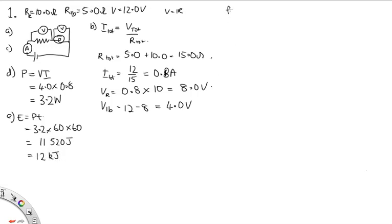Part F says now draw a circuit diagram showing the battery, resistor, and light bulb connected in parallel. Here's our battery, we put the light bulb there, and then the resistor is in parallel with the light bulb and the battery.